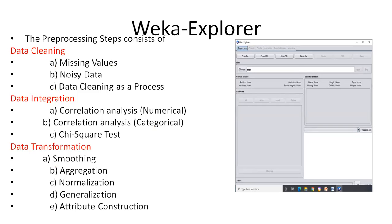Data integration involves collecting data from different sources — some may be flat files, some may be other formats — and placing them in one centralized location. In data integration you perform correlation analysis, chi-square tests for categorical data. Data transformation means converting one format of data to another — for example, normalization is the best example of transformation, along with smoothing, aggregation, and generalization attribute construction.